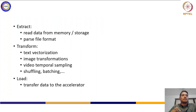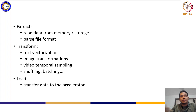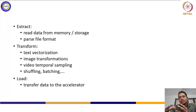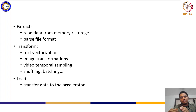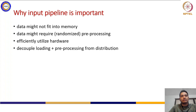The common stages of a pipeline are Extract, Transform, and Load. Extract is essentially reading the data from memory or storage - local disk or remote storage, in whatever file format. Transform includes operations like normalizing your data, vectorizing, shuffling, or batching - different transformations you want to apply. Load is the final stage: loading from RAM to your accelerator, following the memory hierarchy.